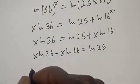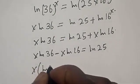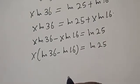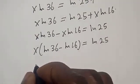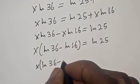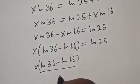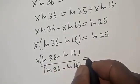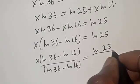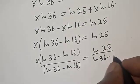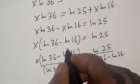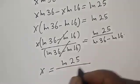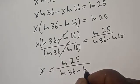Now this is s natural log of 16 and this is s natural log of 36. Let's bring this one to this side: we have s natural log of 36 minus s natural log of 16 is equal to natural log of 25. Then s is common — let's factor it out: s into natural log of 36 minus natural log of 16 is equal to natural log of 25. Now let's divide both sides by natural log of 36 minus natural log of 16. This gives s equal to natural log of 25 divided by natural log of 36 minus natural log of 16.